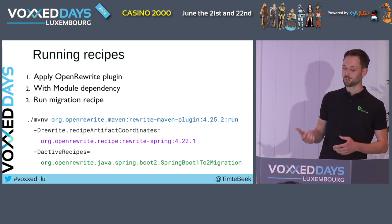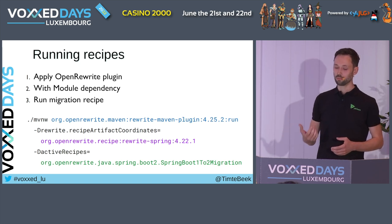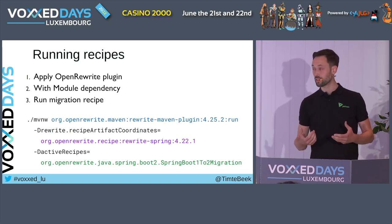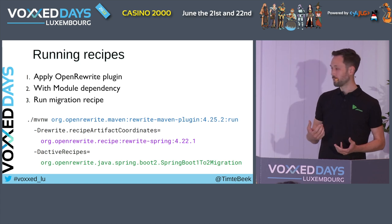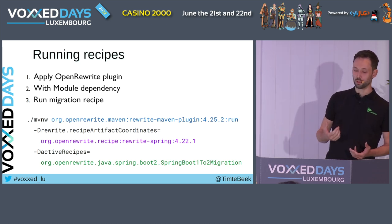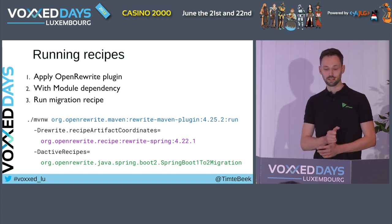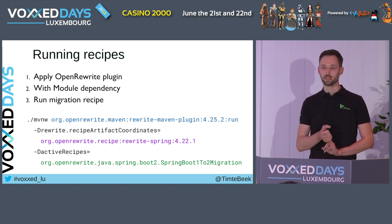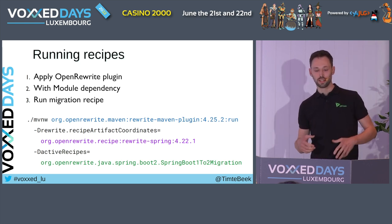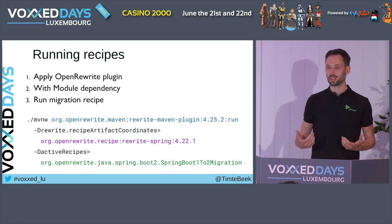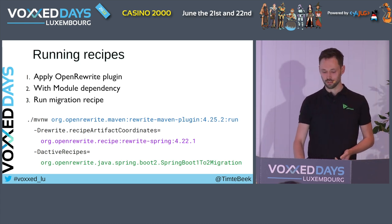The commands seen here will migrate a Spring Boot application to the latest version. And this works all the way back to Spring Boot 1.5. It will update dependencies, properties, and deprecations for many older versions. And it includes the JUnit 5 migration seen before, as well as any Spring-specific test constructs.